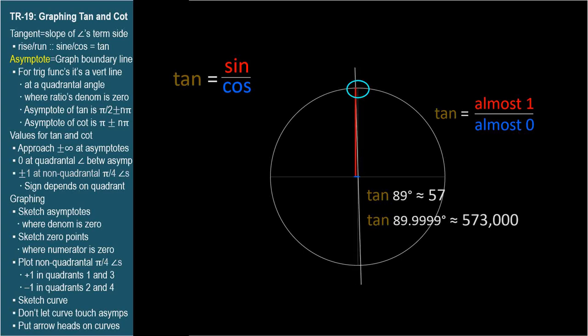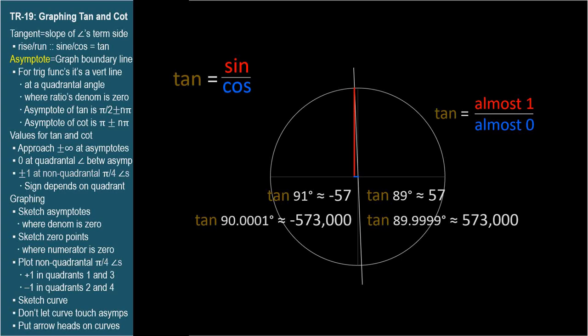Now let's consider an obtuse angle, which would be in quadrant two. Let's imagine it gets smaller and smaller as it approaches pi over two from the other side. In quadrant two, the cosine is negative and the sine is positive, so sine over cosine will be a negative number. The magnitude of tangent near pi over two will be very large — a very large negative number. Due to symmetry, the tangent of 91 degrees is about negative 57, and the tangent of 90.0001 degrees is about negative 573,000. You don't need to memorize those numbers; I'm just trying to show you that tangent gets very large as the angle's cosine approaches zero.